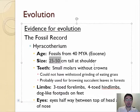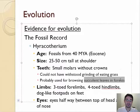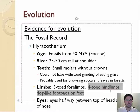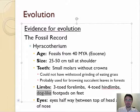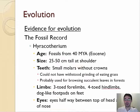Hyracotherium had small molars without crowns, meaning they did not eat grass — they probably ate small soft leaves. They also had toes: three toes on their front legs and four toes on their back legs, with little pads like dogs. Their eyes were halfway between the top of their head and the tip of their nose. So, baby cute horses — that's Hyracotherium, 40 million years ago.